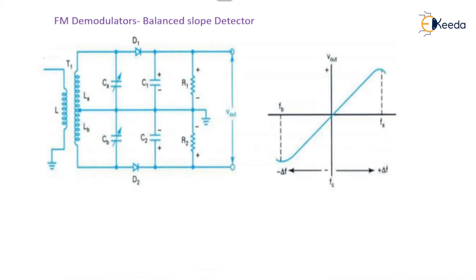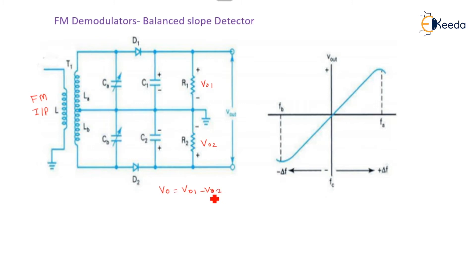Now we will see the circuit diagram of this balanced slope detector. FM is applied at the input. The transfer across transformer one — the secondary side of this transformer is center-tapped — results in the voltage V01 across the upper half and V02 across the lower half. The output expression is V0 = V01 minus V02. The two slope detectors are connected back to back.